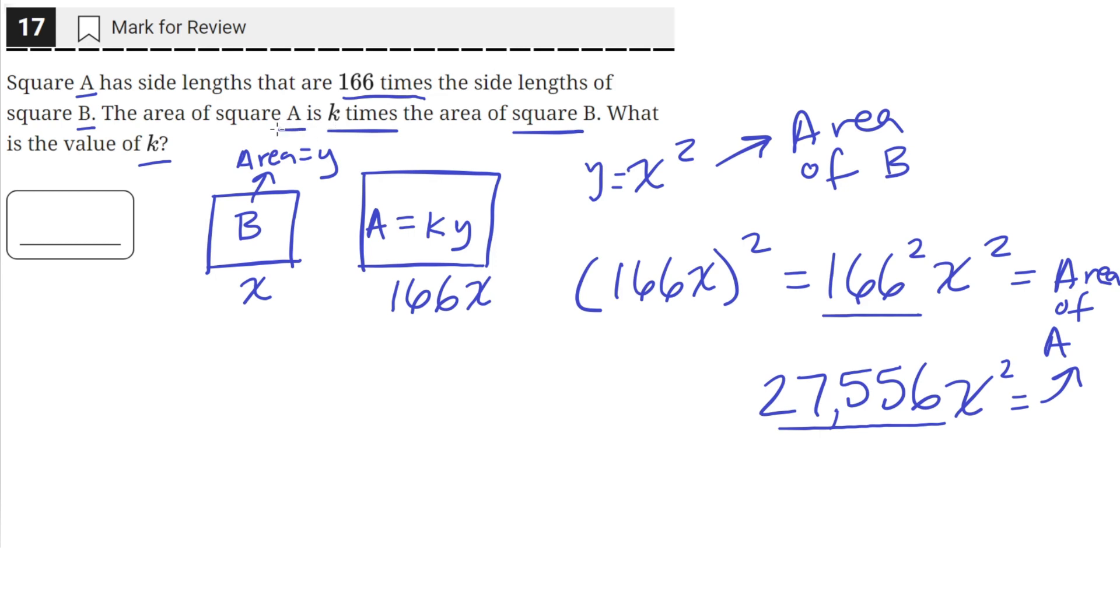And the problem statement said that the area of A, which is the whole term, is k times the area of B. And the area of B is just this x squared. So the coefficient of the area of B is equal to k. So the answer is just 27,556.